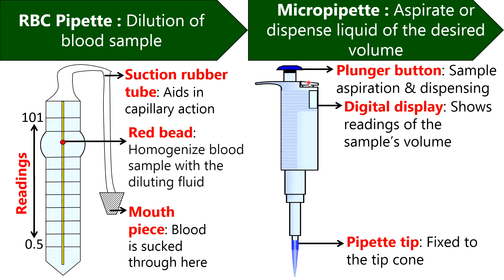Pipette tip is fixed to the micropipette tip cone to draw the sample into and dispense from the micropipette. By pressing the tip ejector button, we can remove the pipette tip. Then RBC diluting fluid is also required to dilute the given blood sample in order to count the red blood cells.